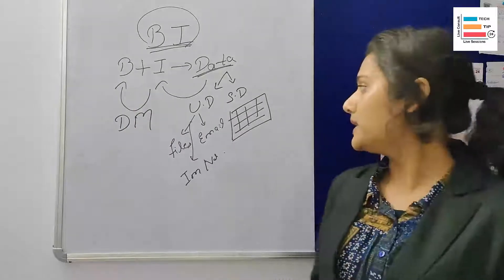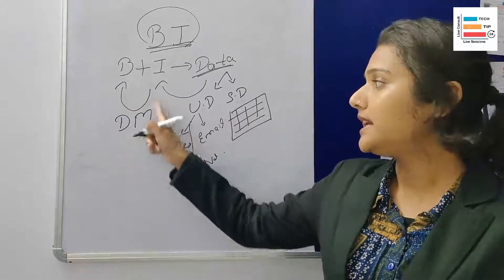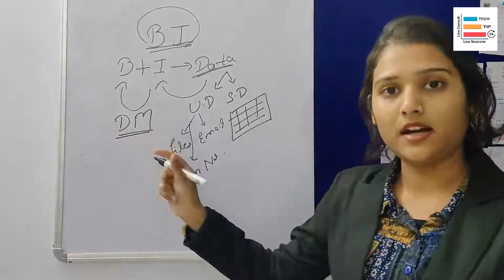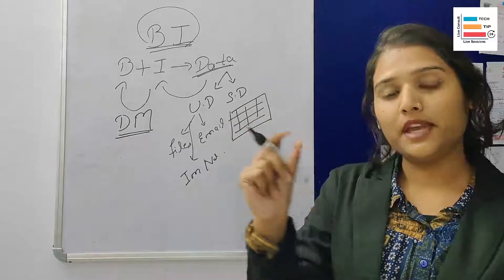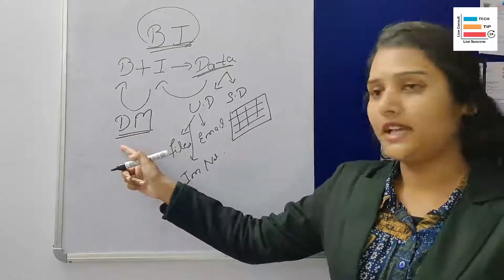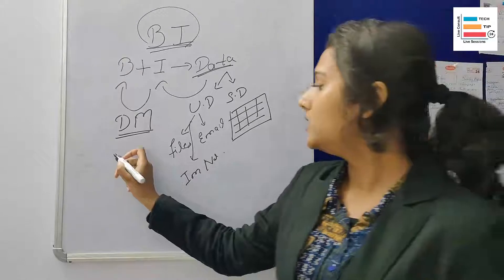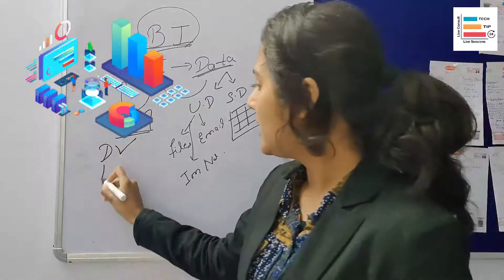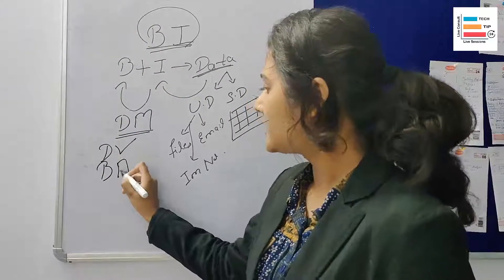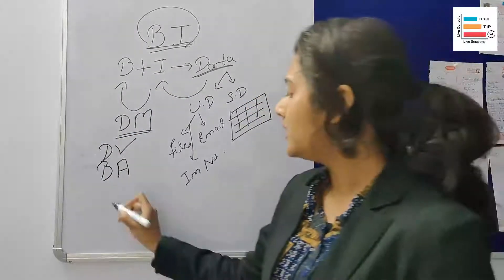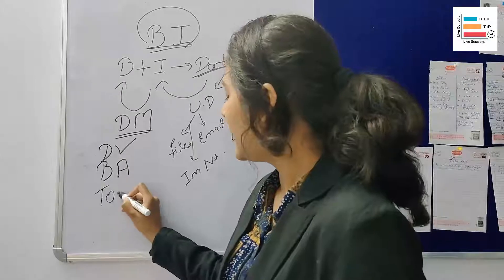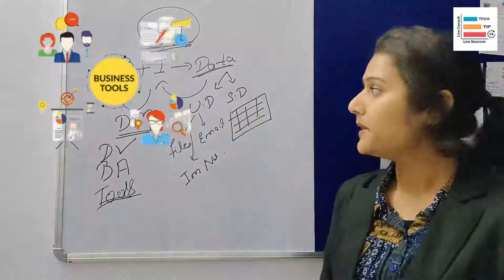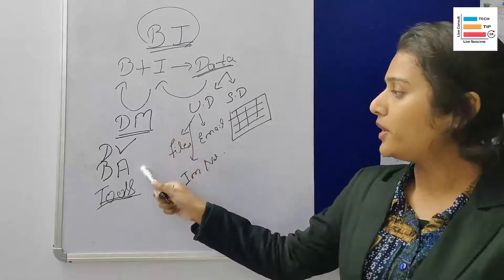What you need to do is, first of all, learn data mining. In data mining — data plus mining — you need to learn data mining, data visualization, business analytics, and the important tools and infrastructure to learn all these concepts. These are the four key points you need to learn to become a business intelligence analyst.